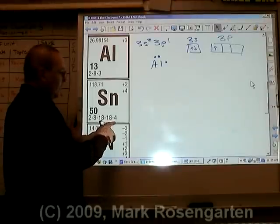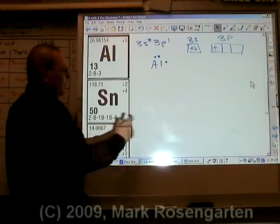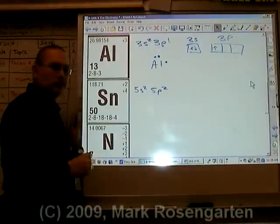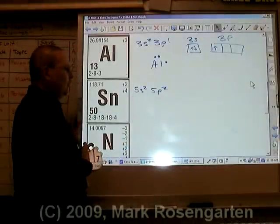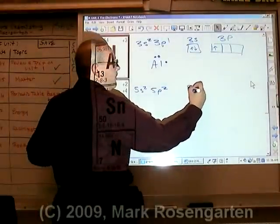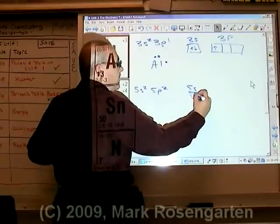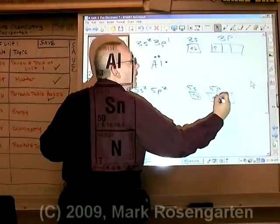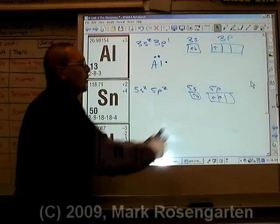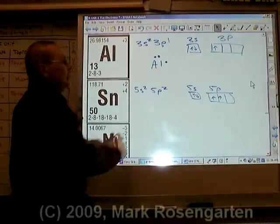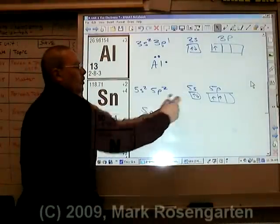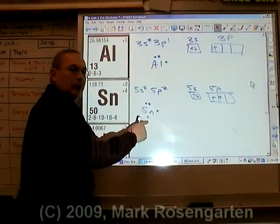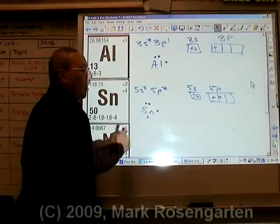Tin has four valence electrons in the fifth energy level: 5s2, 5p2. That accounts for the four electrons. The 5s electrons are up and down paired, and the 5p electrons are up, up — because the first two electrons go into separate orbitals. The dot diagram will reflect that: Sn with the two s electrons, then the two p electrons in different orbitals. We say these electrons are unpaired.